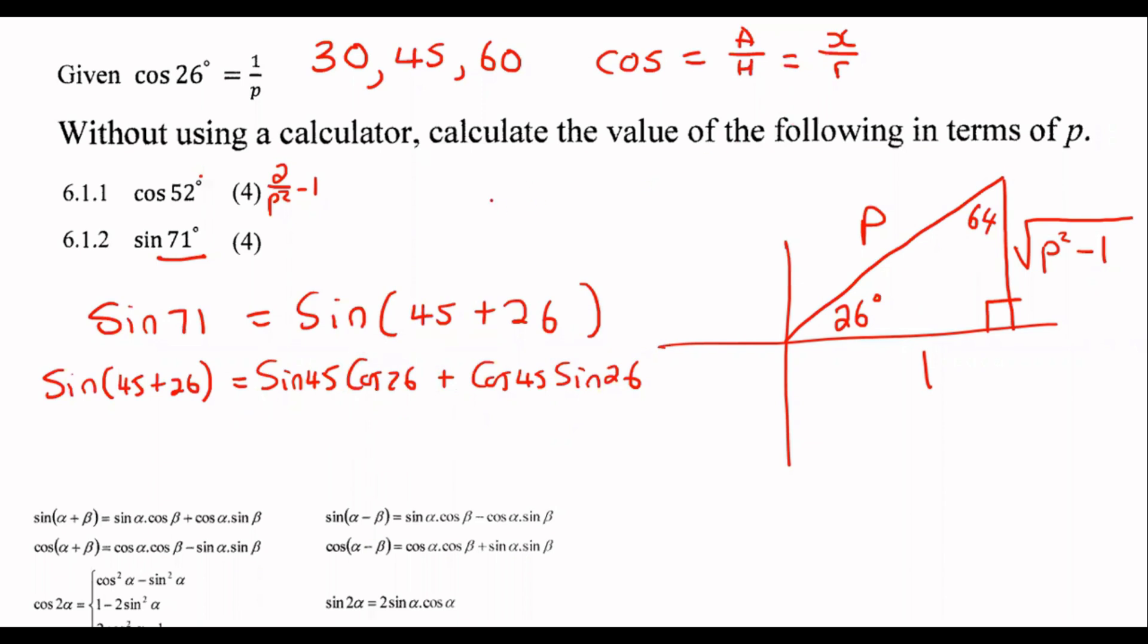Now special triangles. Let's just write out the 45 one. So it's one, one square root two. So that means sin 45 is going to be one over square root two. Cos 26. You can get it on the triangle, or you can just remember that they've already given it to us as one over p plus cos 45 is also one over square root two. And then sin 26 is going to be opposite over hypotenuse, which will be the square root of p squared minus one over p.